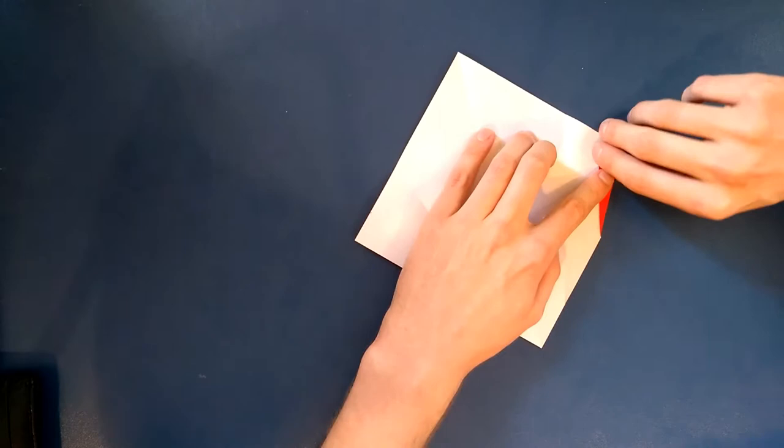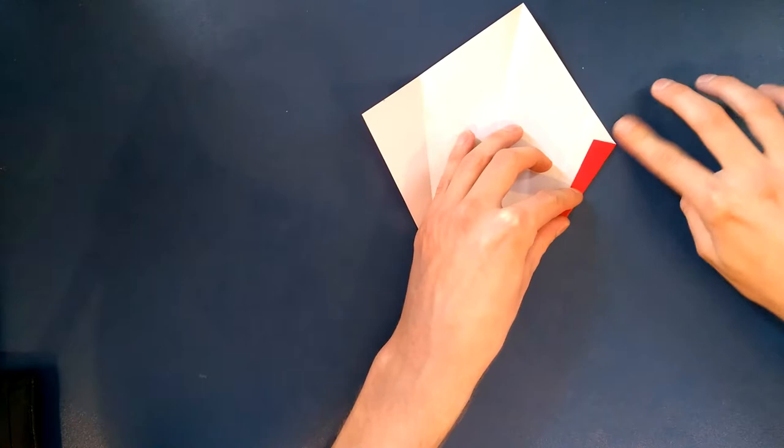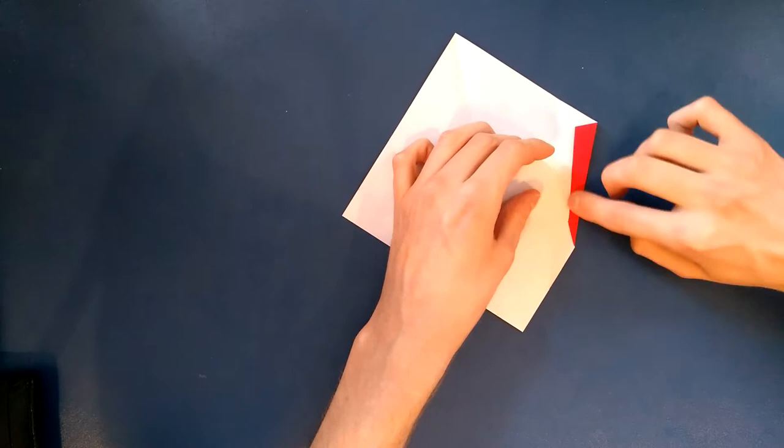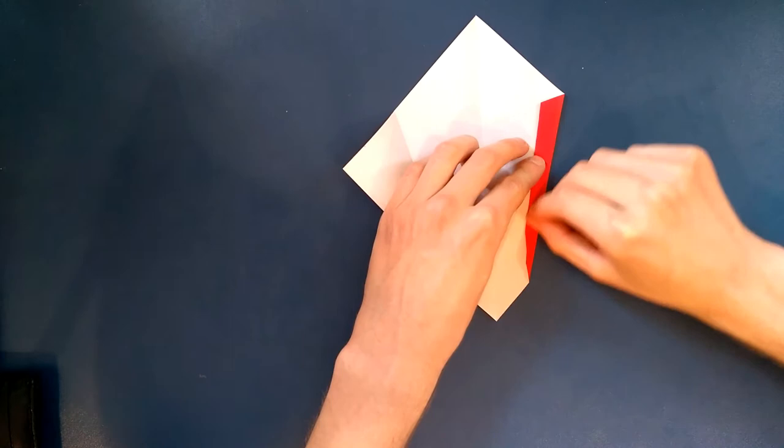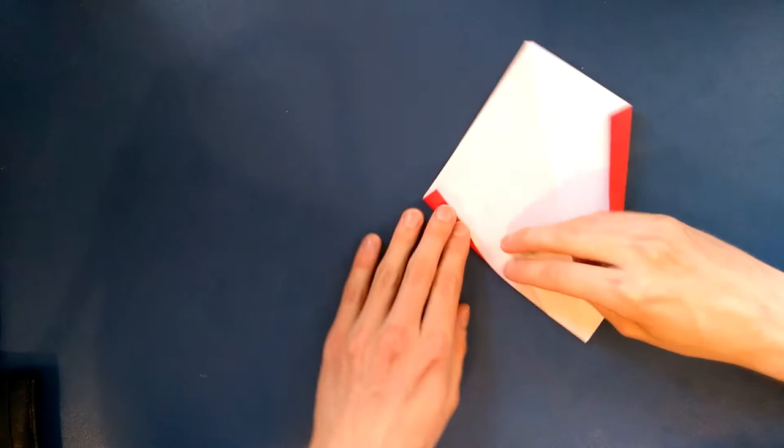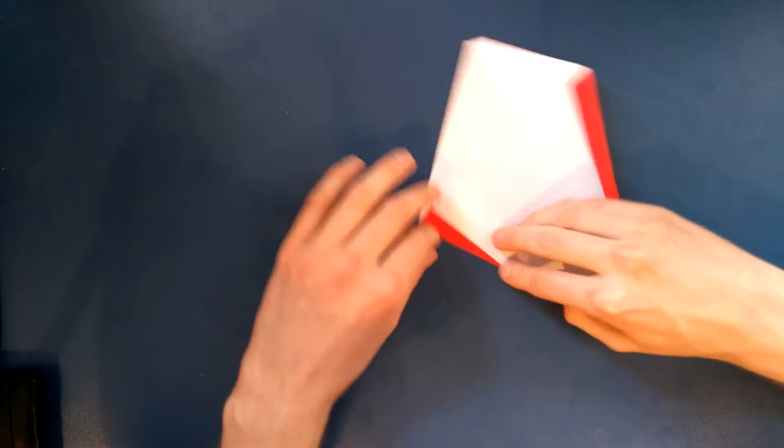Then what we want to do is fold it over again like this, just trying to keep the edges parallel with the first crease. Fold it over again and then folding over once more. Doing exactly the same thing on the left side, fold it up about a third, fold over on itself, and again, and again. So it should look like that.